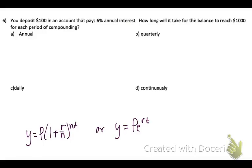I'll do the first problem with you. So annual we're going to use the equation that compounds periodically, that's the one with the R over N.